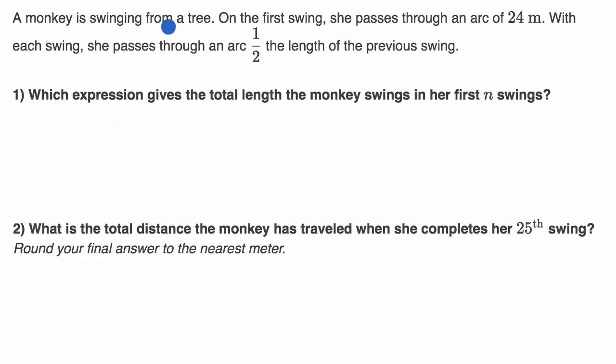We're told a monkey is swinging from a tree. On the first swing, she passes through an arc of 24 meters. With each swing, she passes through an arc one half the length of the previous swing.